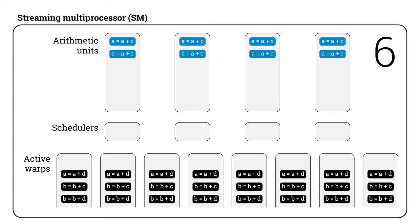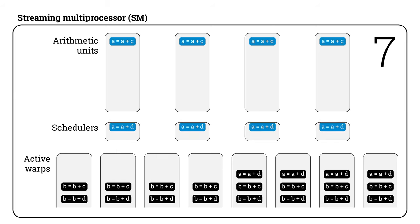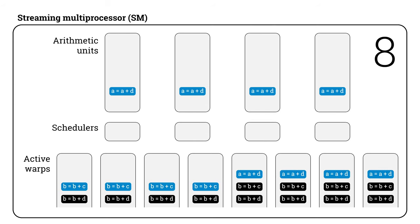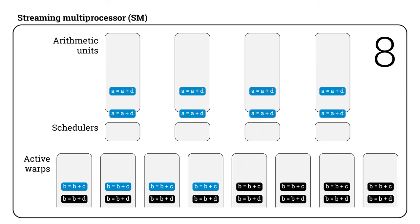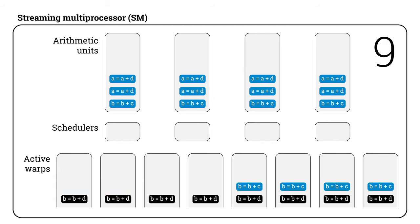Finally, something is ready. Four instructions go to the arithmetic units. Next clock cycle, more things are ready — four more instructions go to the arithmetic units. Then the next instruction does not depend on anything currently being executed, so we can push it to the arithmetic units as well. Note that here we do have some instruction-level parallelism helping us — two consecutive instructions that do not depend on each other can be in the arithmetic units simultaneously.